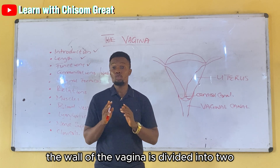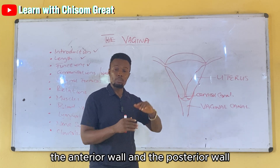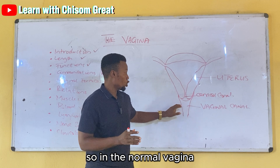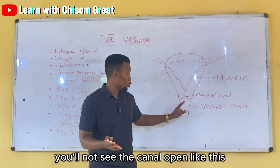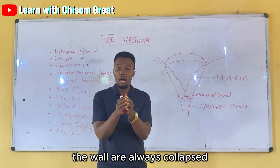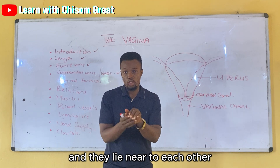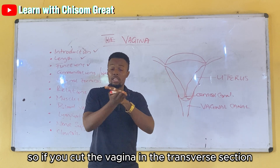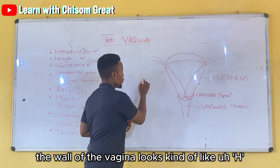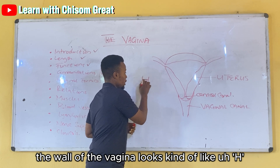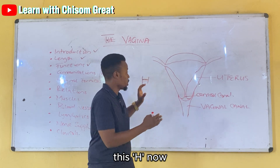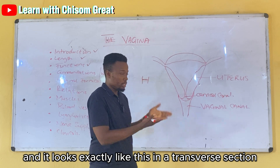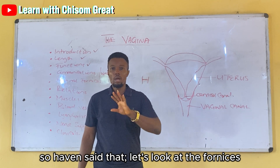The wall of the vagina is divided into two: the anterior wall and the posterior wall. The wall of the vagina is collapsed — in the normal vagina you will not see the canal open or the walls separated. The walls are always collapsed and lie near to each other, except when something passes through. If you cut the vagina in a transverse section, the wall looks kind of like a H-shape, collapsed.